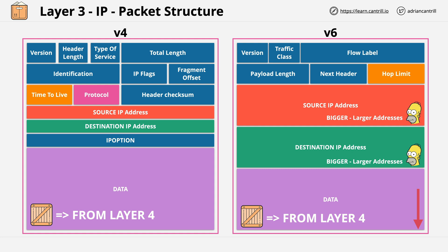So these are IP packets. Generally, they store data from layer 4, and they themselves are stored in one or more layer 2 frames as they move around the networks or links which form the internet.